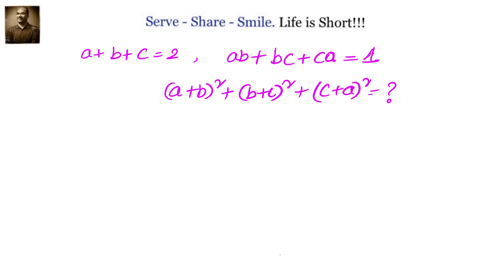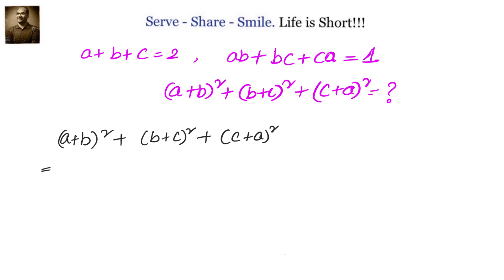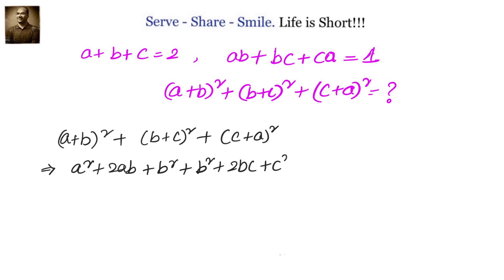So we have (a+b)² plus (b+c)² plus (c+a)². Applying the formula (x+y)² equals x² plus 2xy plus y², we get: a² plus 2ab plus b², plus b² plus 2bc plus c², plus c² plus 2ac plus a².